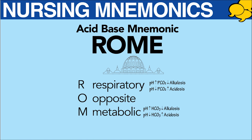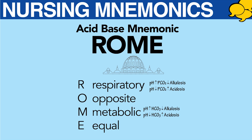M is for metabolic and E is for equal. In metabolic alkalosis, the pH is going to be high and the bicarb is going to be low. In metabolic acidosis, the pH is going to be low and the bicarb is going to be high.